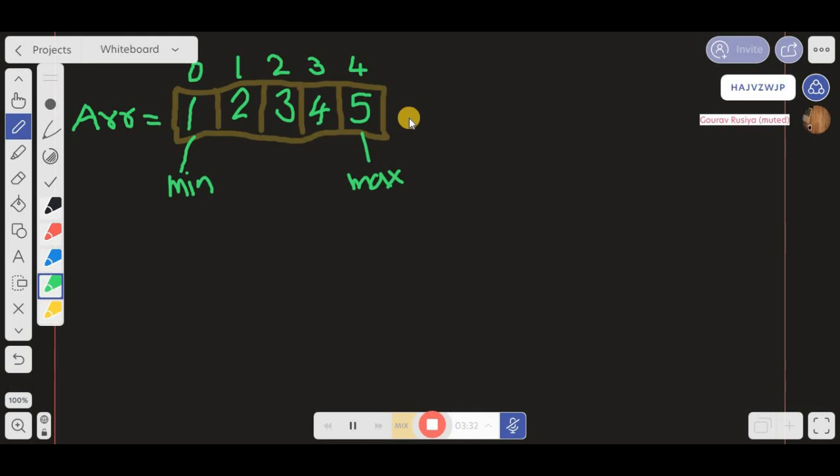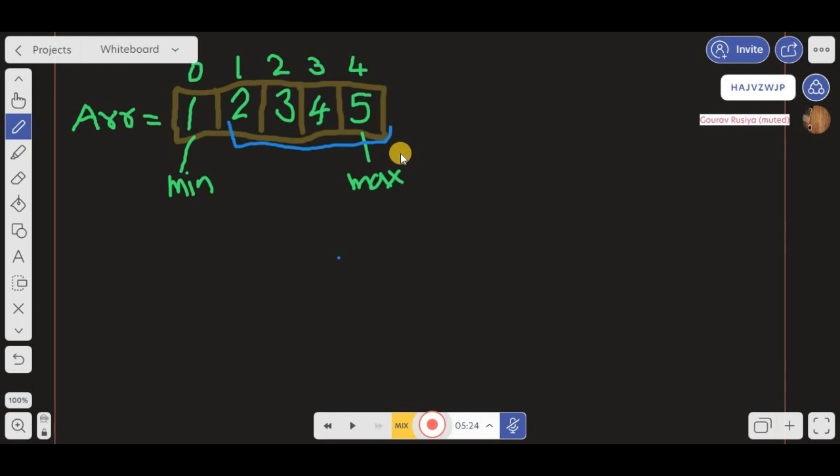In case of a sorted array, this problem is kind of easy, but the problem statement doesn't say that elements in the array will be sorted. First we'll try to find the maximum sum. If we add these last four elements, we'll get the maximum sum, and if we add the first four elements, we'll get the minimum sum.